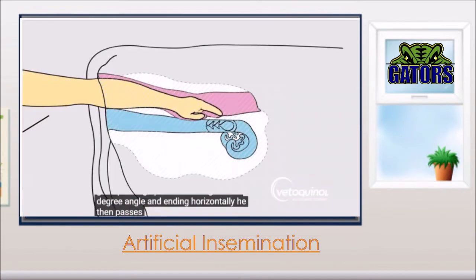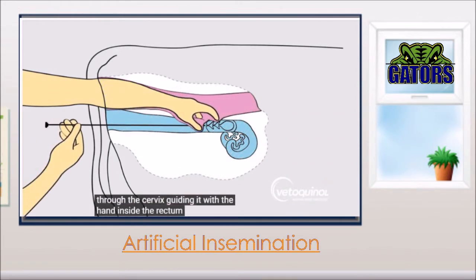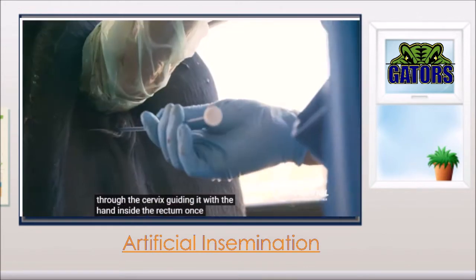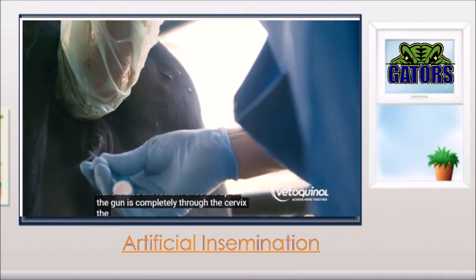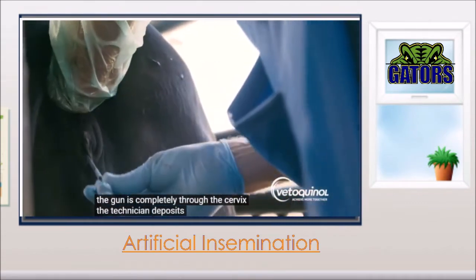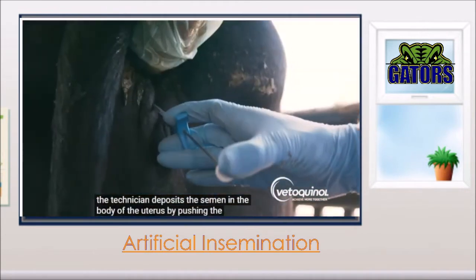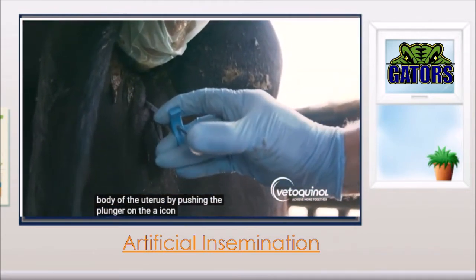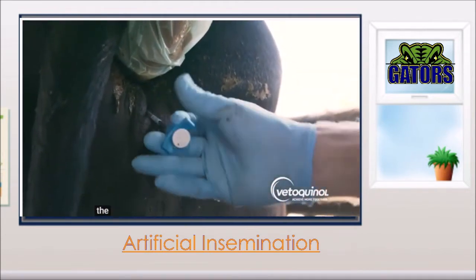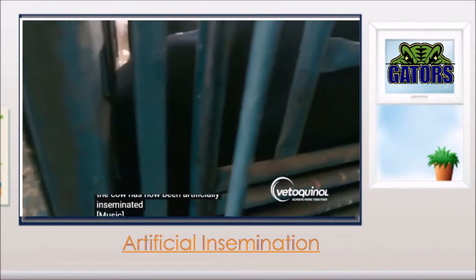The technician then passes the tip of the AI gun through the cervix, guiding it with the hand inside the rectum. Once the tip of the gun is completely through the cervix, the technician deposits the semen in the body of the uterus by pushing the plunger on the AI gun. The cow has now been artificially inseminated.